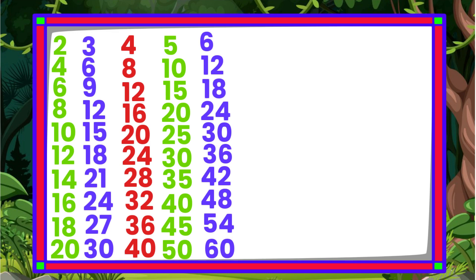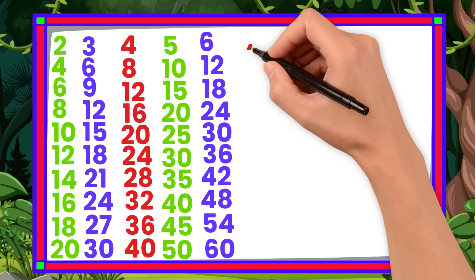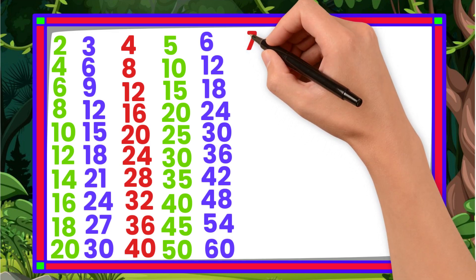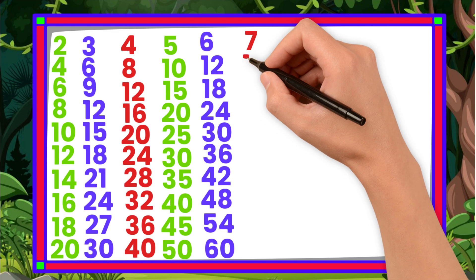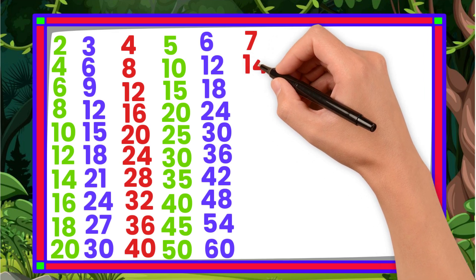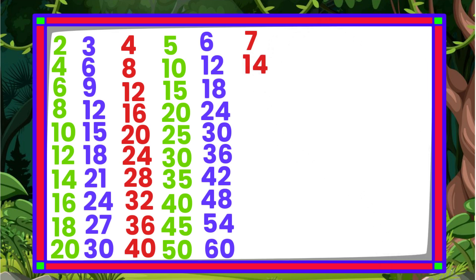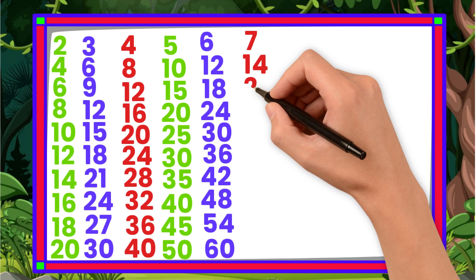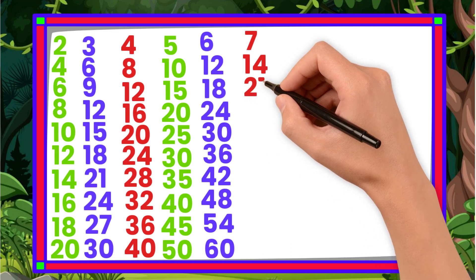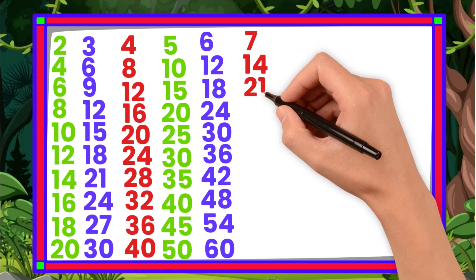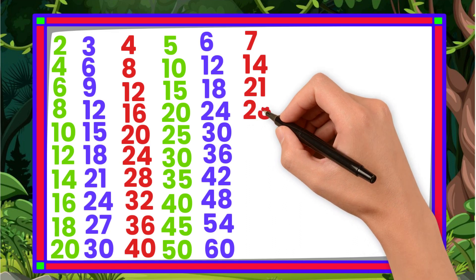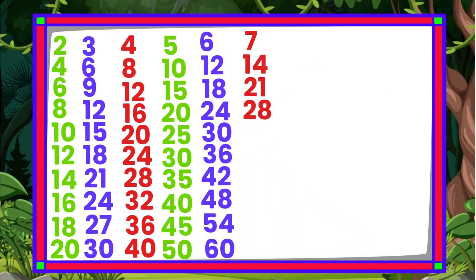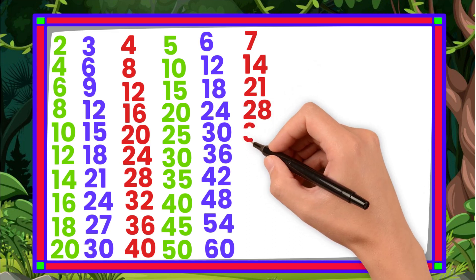7 1s are 7. 7 2s are 14. 7 3s are 21. 7 4s are 28. 7 5s are 35.